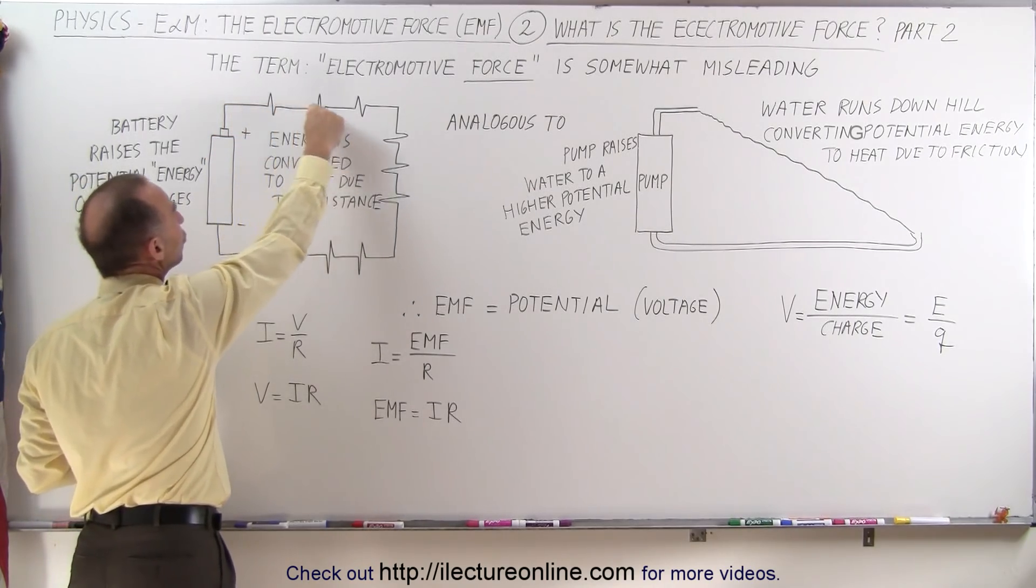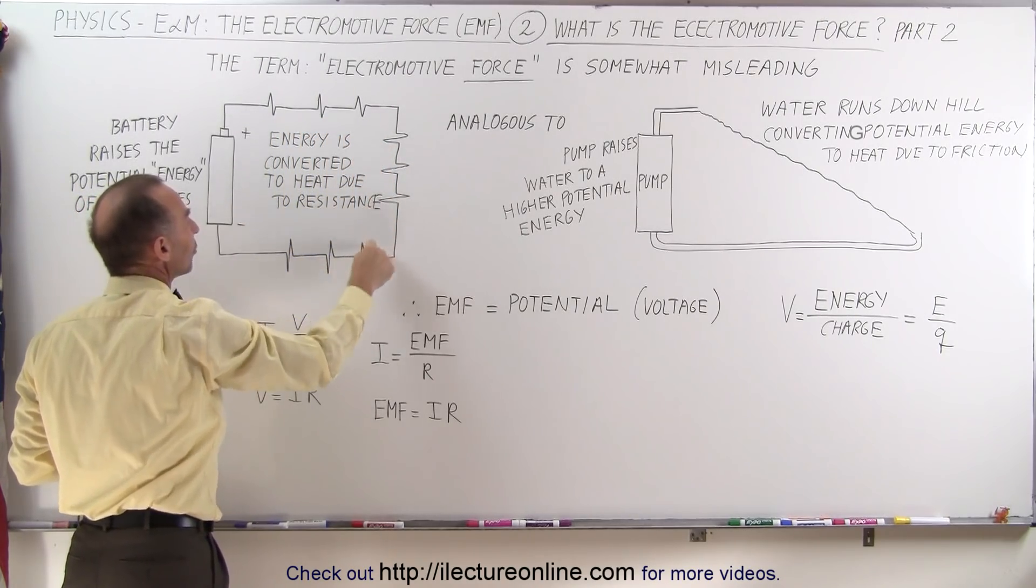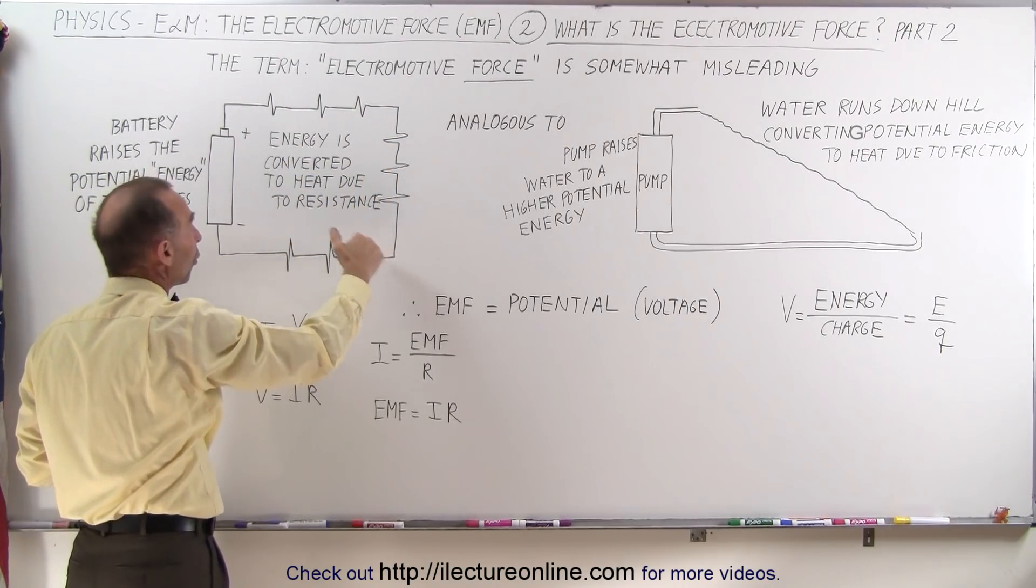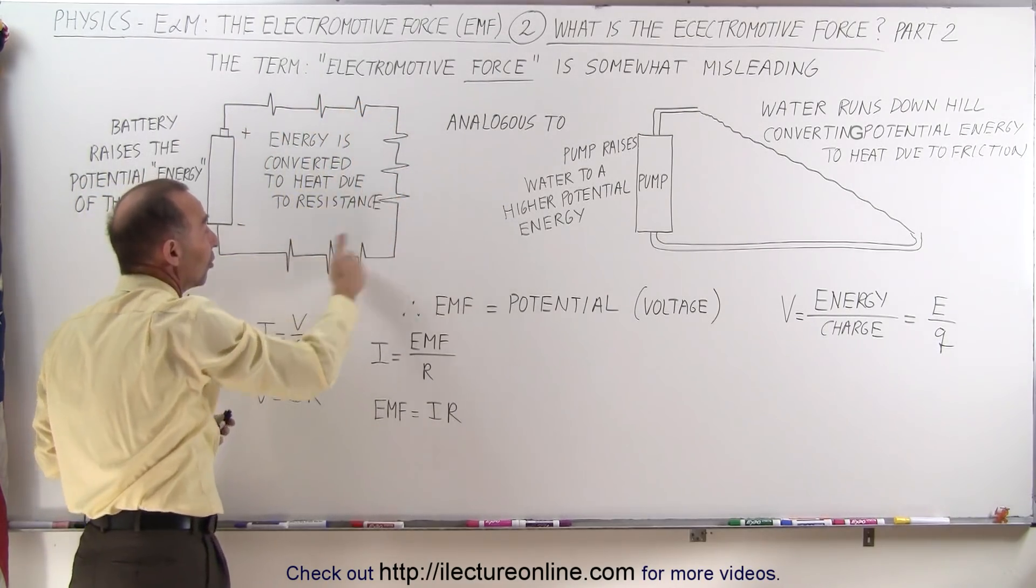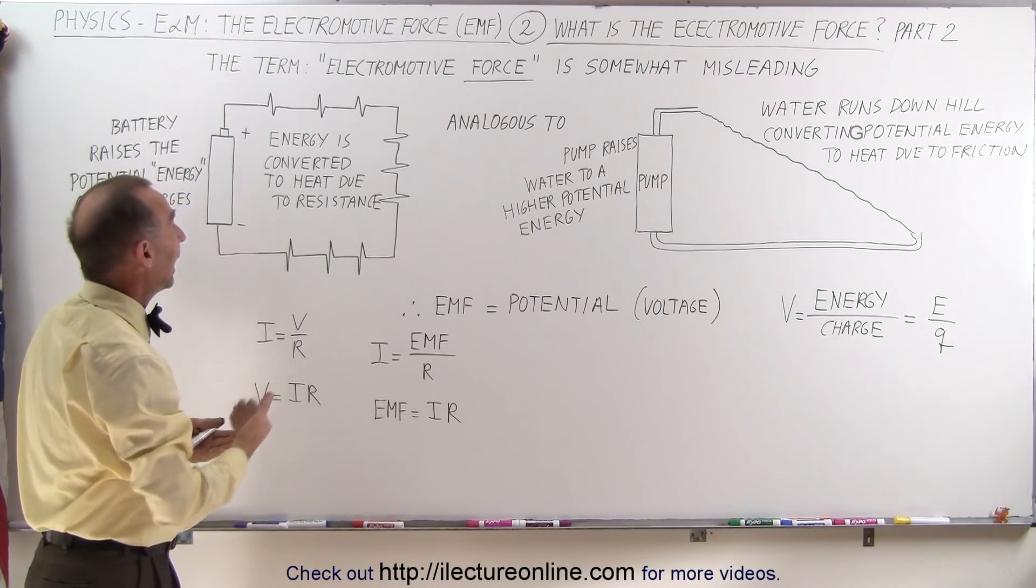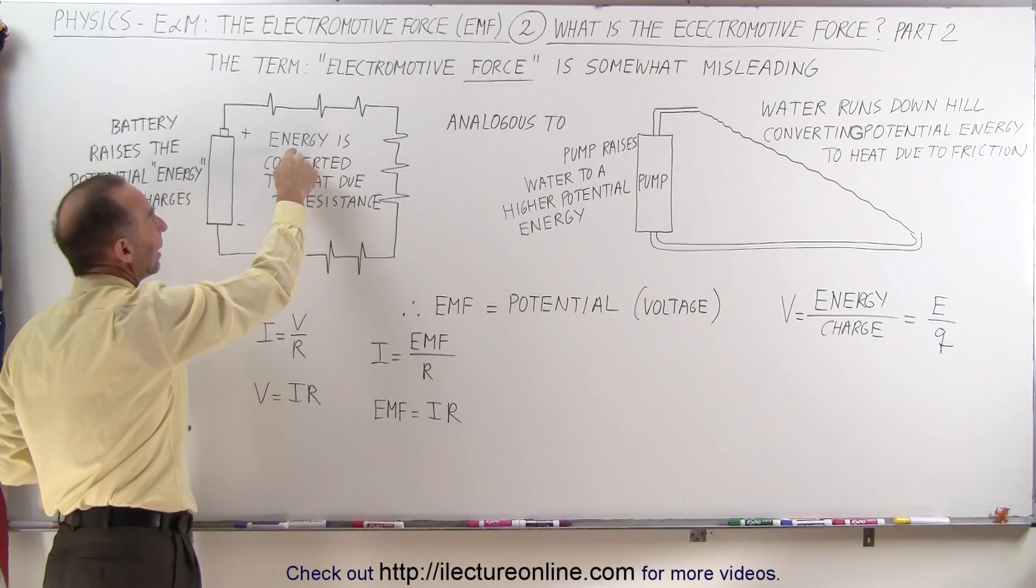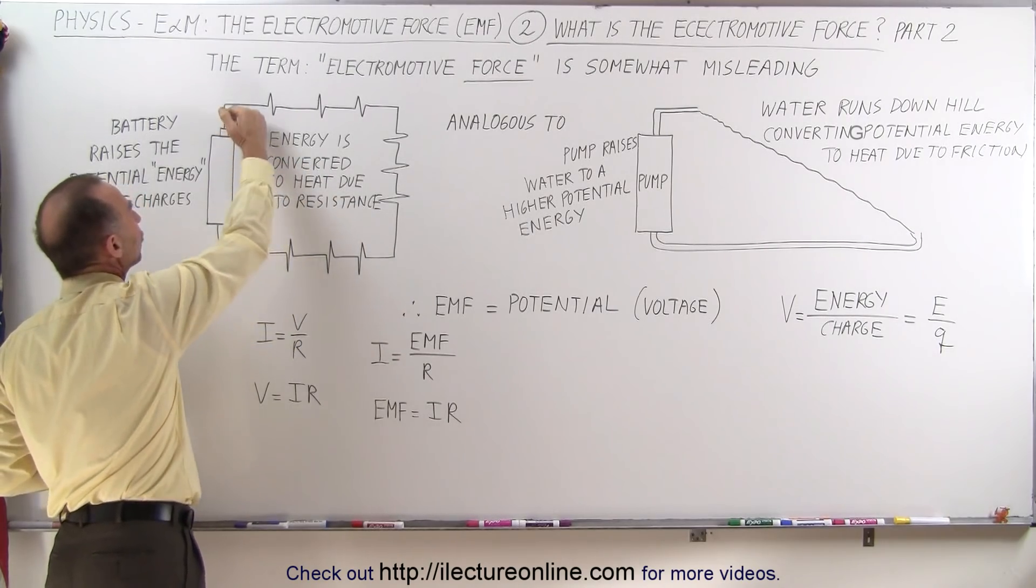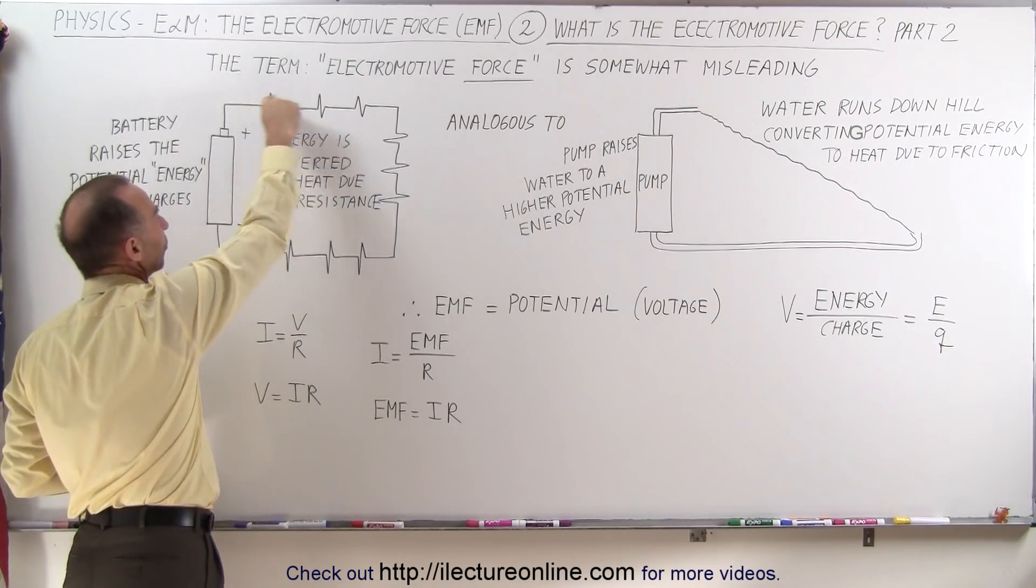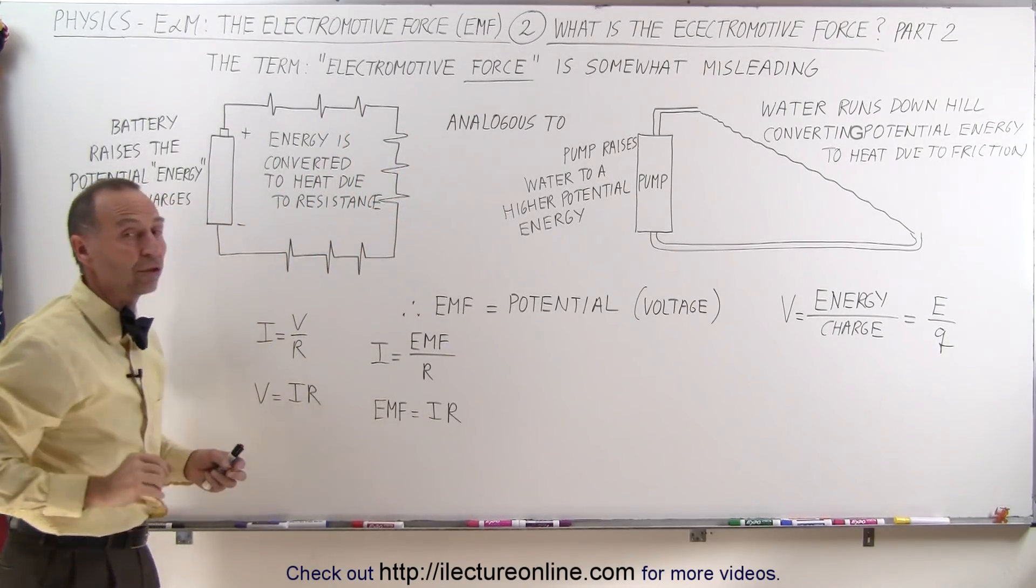This allows the charges to go through the circuit. Notice I've drawn resistor symbols on this conductor to indicate that every conductor has a certain amount of resistance, or there could be specific resistors on the circuit. As the charges flow through and meet resistance, the energy gained from the battery is converted to heat. By the time the charges make it to the other side of the battery, all that energy was lost to overcoming the resistance of the circuit.